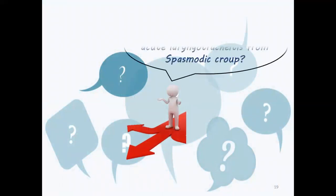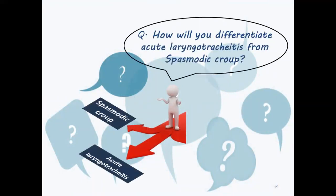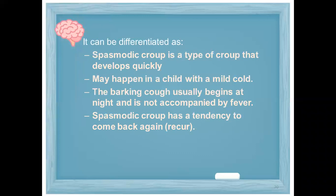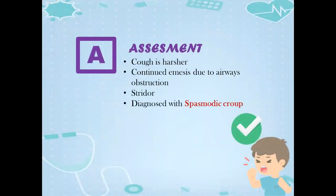A question arises: how will you differentiate acute laryngotracheitis from spasmodic croup? Spasmodic croup is a type of croup that develops quickly and may happen in a child with a mild cold. The barking cough usually begins at night and is not accompanied by fever. Spasmodic croup also has a tendency to recur. Based on the assessment, the cough is harsher, there is continued secretions due to airway obstruction and stridor, consistent with a diagnosis of viral croup.